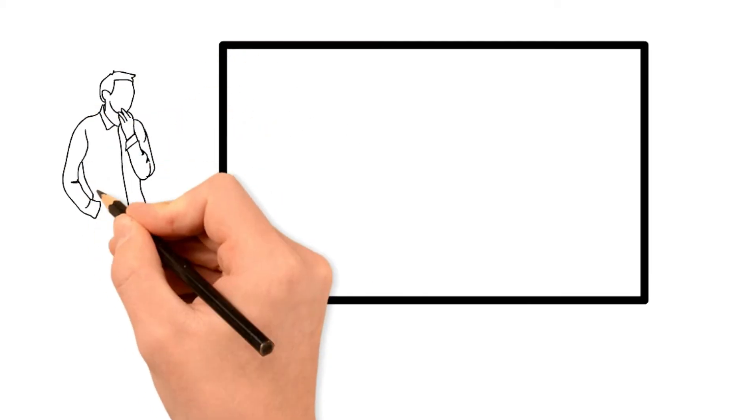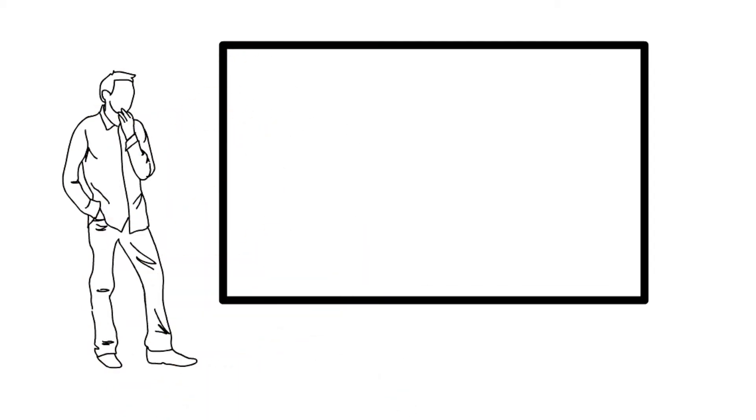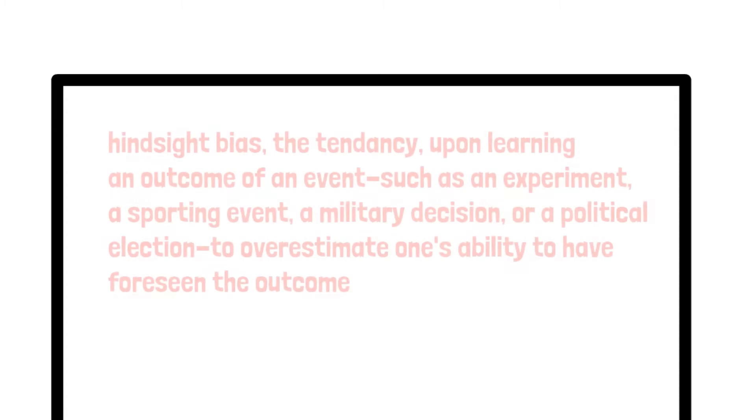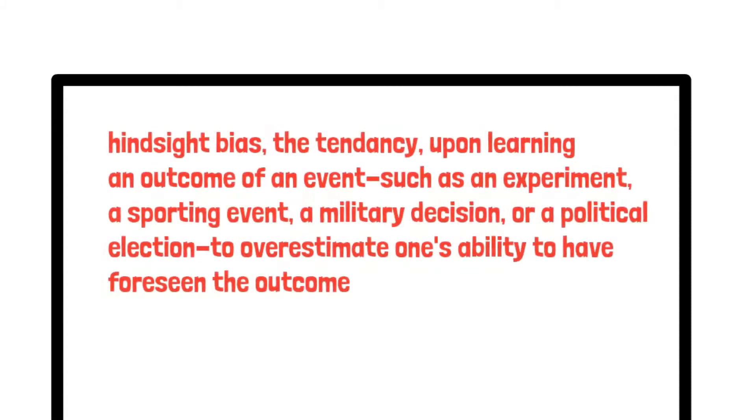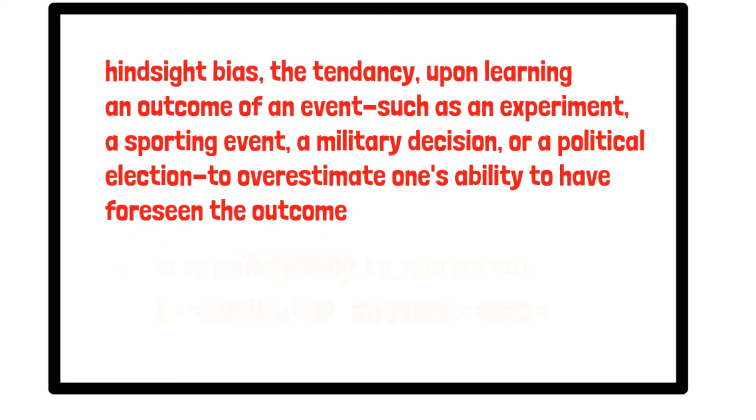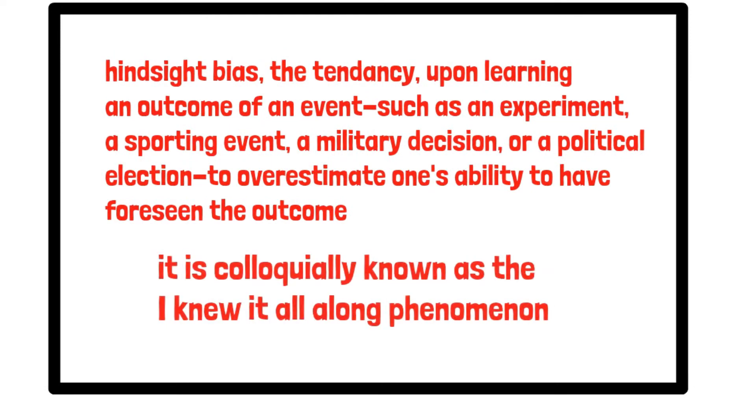So that's an example, but let's formally understand what hindsight bias is. Quote: Hindsight bias, the tendency upon learning an outcome of an event—such as an experiment, a sporting event, a military decision, or a political election—to overestimate one's ability to have foreseen the outcome. It is colloquially known as the 'I knew it all along' phenomenon. End of quote.